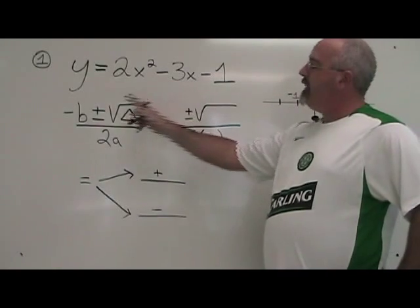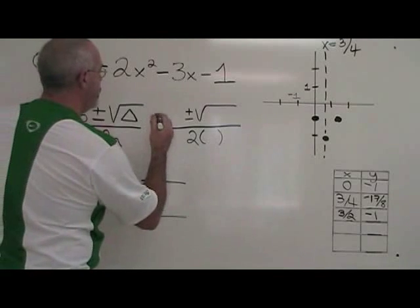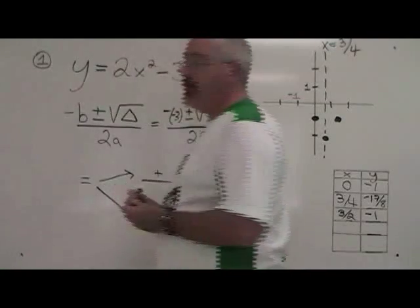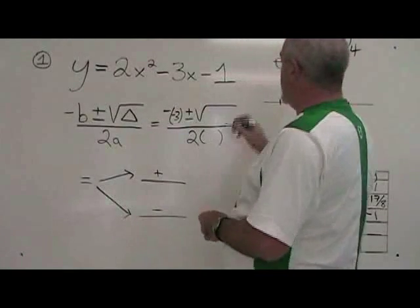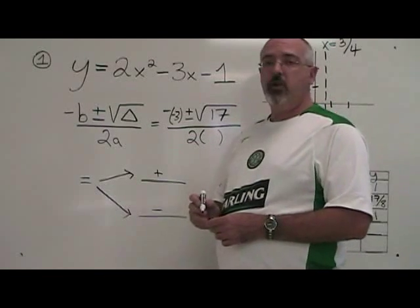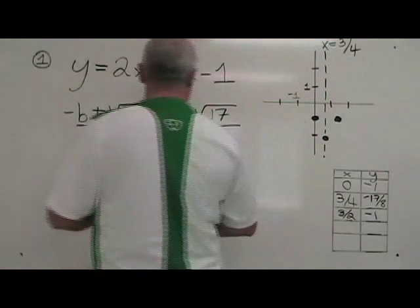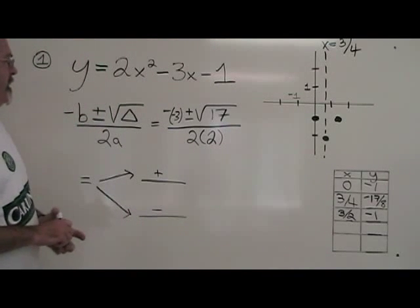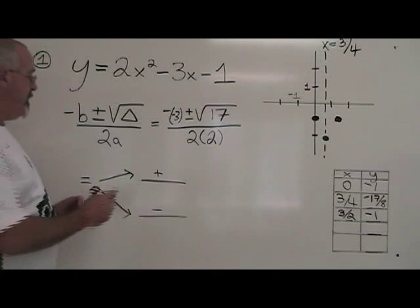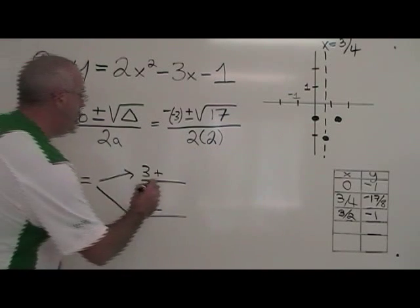Our b is negative 3, so negative of b is negative of negative 3. Our delta was 17, so we put 17 inside the radical. And our a is 2, so the bottom is 2 times 2. The negative of negative 3 is positive 3. 2 times 2 is 4.